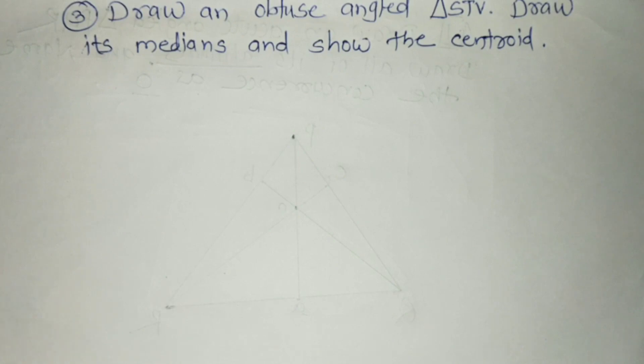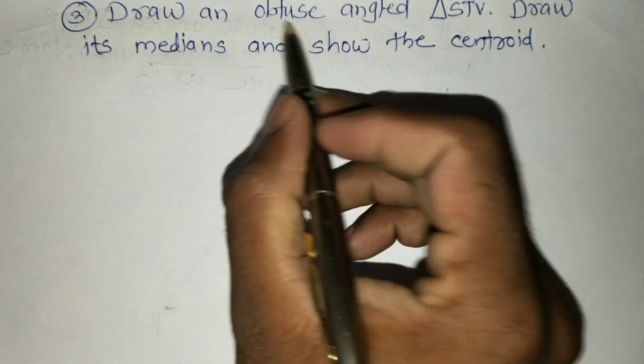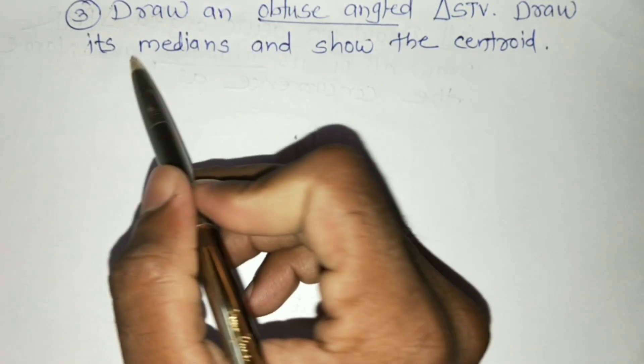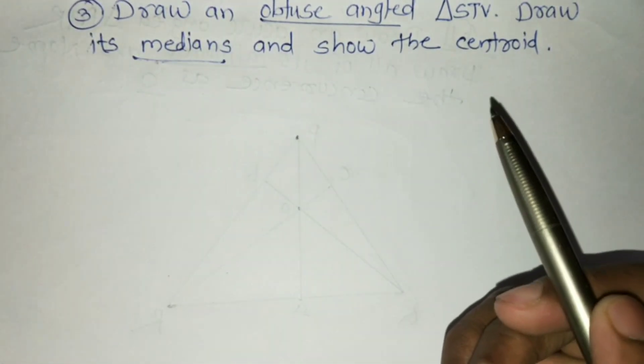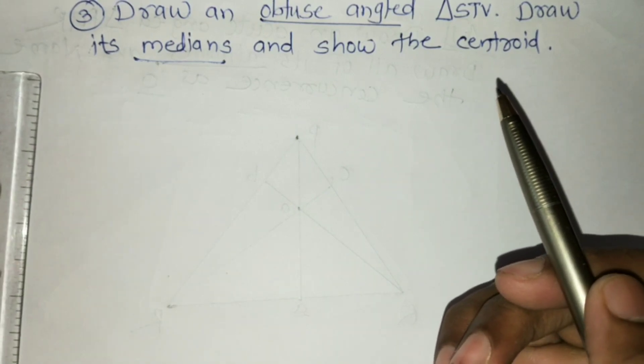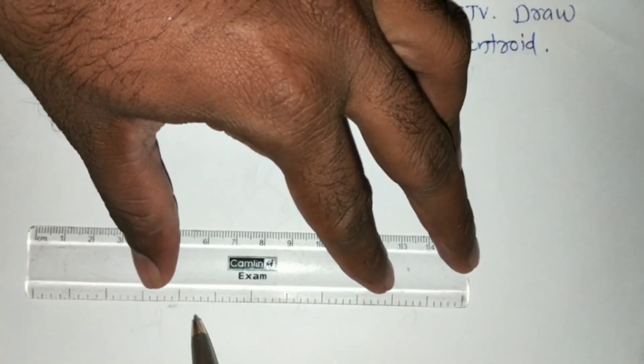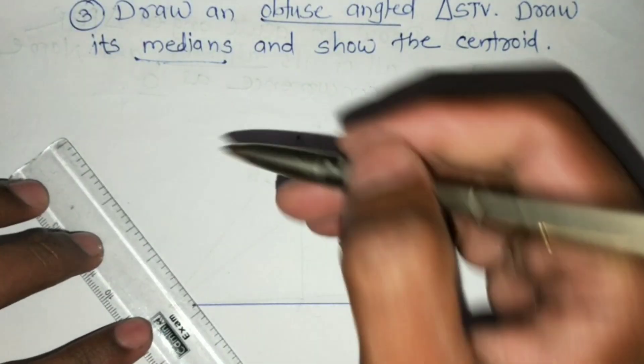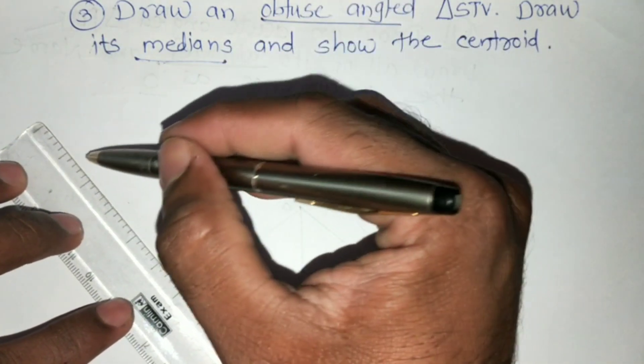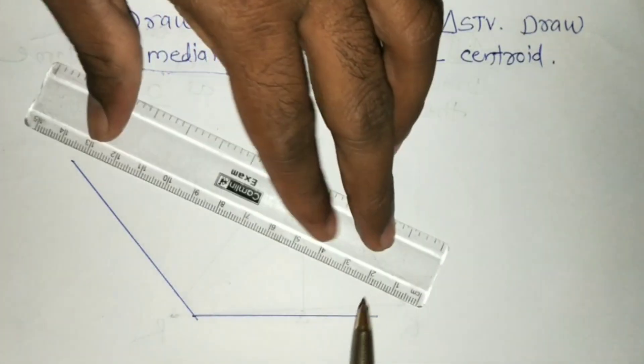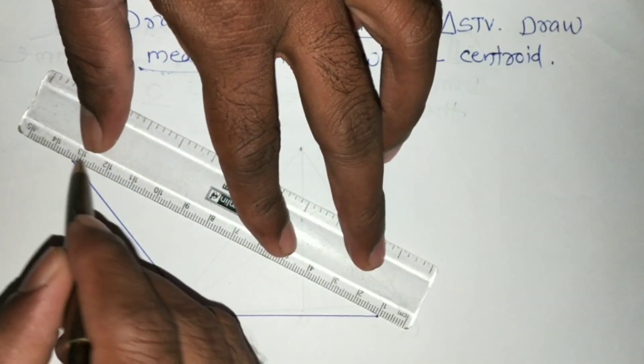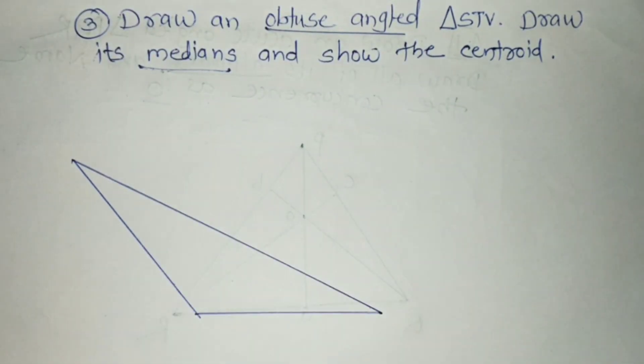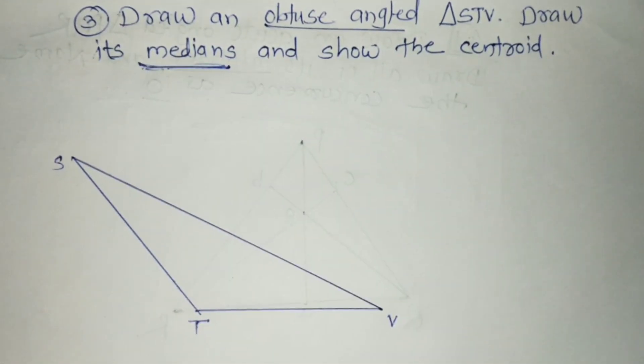The next example is draw an obtuse angle triangle STV and draw its medians and show the centroid. So first we have to draw the obtuse angle triangle. This is the obtuse angle triangle S, T, and V. We have to draw all its medians, so we need a compass to draw its medians. First we have to draw the median between T and V.